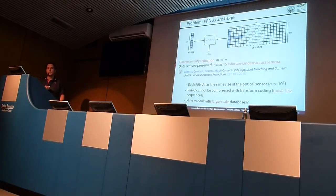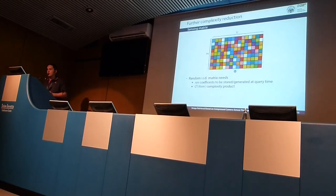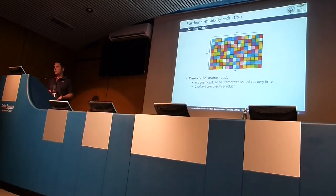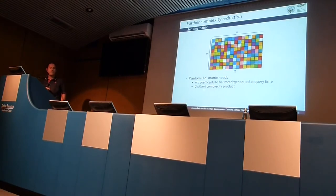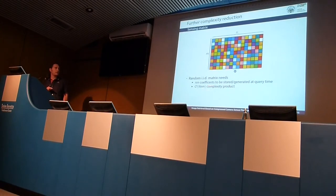The problem is that random projection with a full random matrix is computationally expensive. First, you have to generate N times M random coefficients for each query, which is expensive and you cannot store the matrix — you must regenerate it. Then, the complexity of the matrix product is quadratic: N times M. This needs to be addressed.